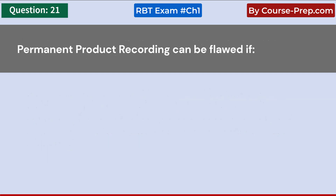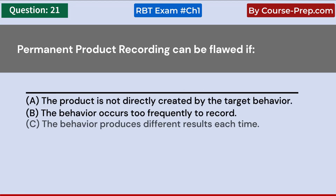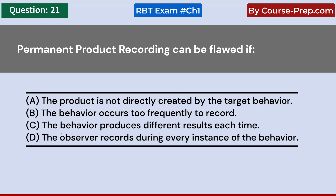Permanent product recording can be flawed if: A. The product is not directly created by the target behavior. B. The behavior occurs too frequently to record. C. The behavior produces different results each time. D. The observer records during every instance of the behavior. Answer A: The product is not directly created by the target behavior.